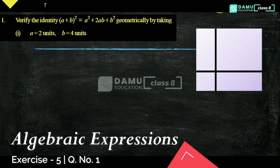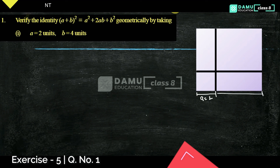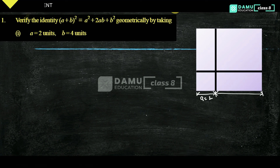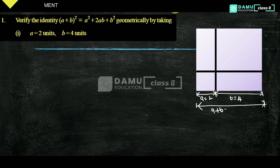Draw one square with the given measurements. Let us take from here to here — that is a — which will be equal to 2 units. From here to there, b will be equal to 4 units. If you add both, a plus b will be equal to 2 plus 4, that will be equal to 6.